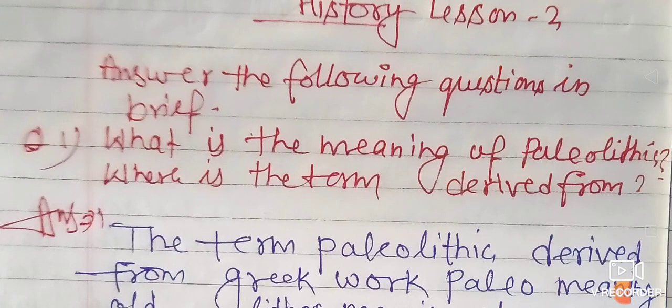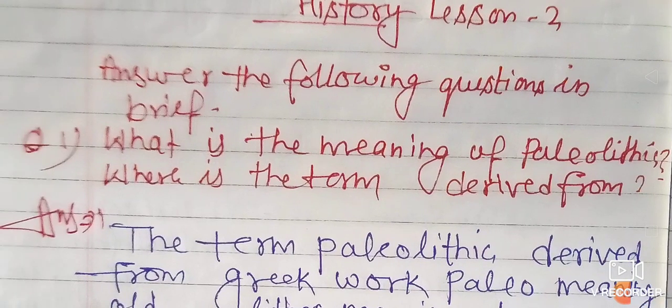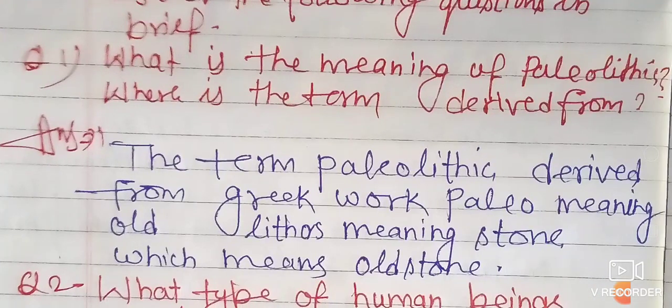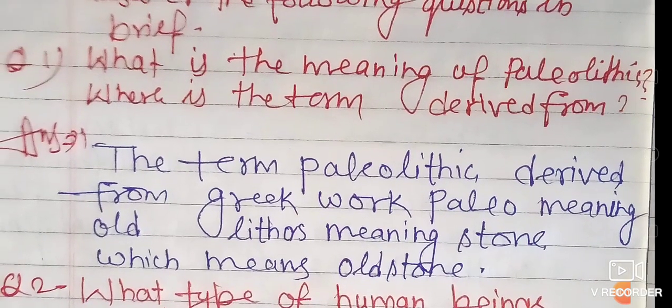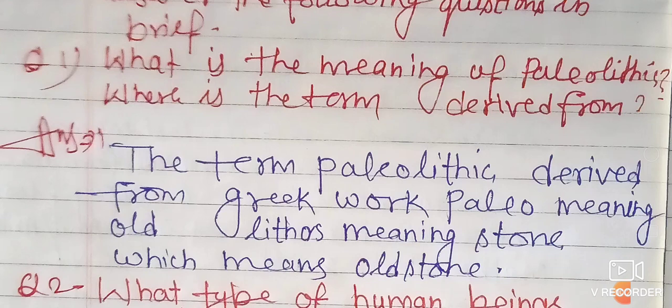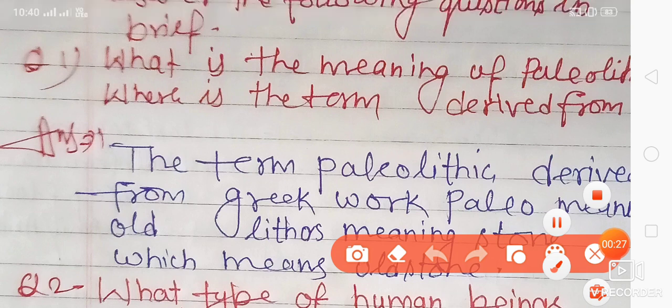Question number 1: What is the meaning of Paleolithic? What is the term derived from? This term is derived from the Greek word. Greek word 'Paleos' means old and 'Lithos' means stone, which means old stone age.